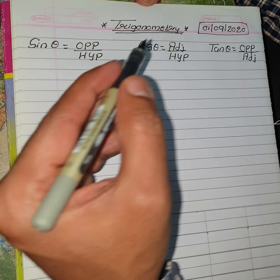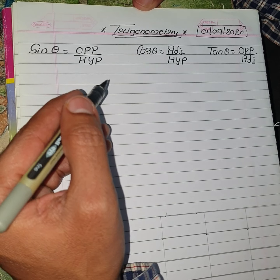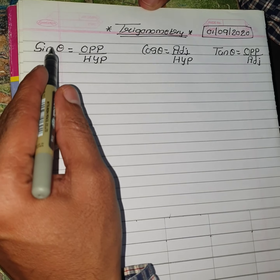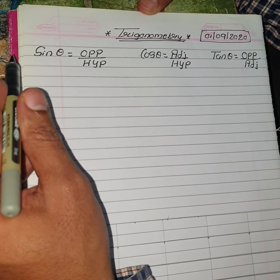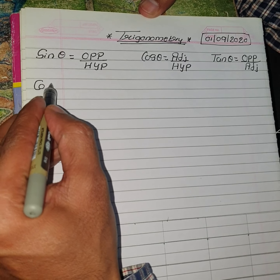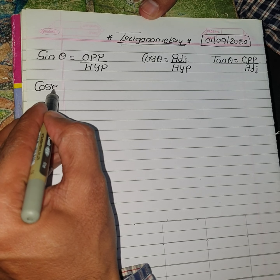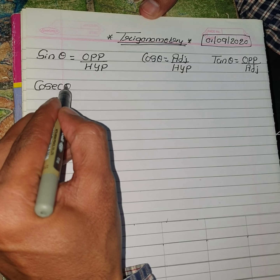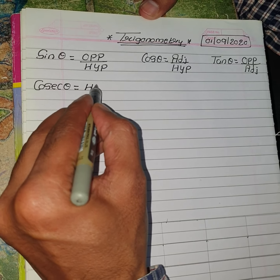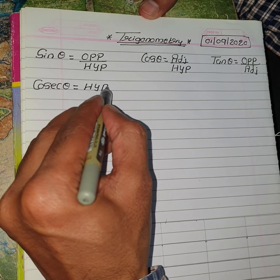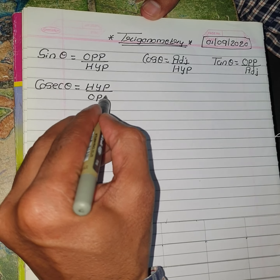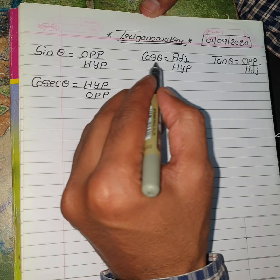In 10th Standard, we are going to see 3 more ratios. The reciprocal of Sin Theta is Cosec Theta. So what will be the formula? Hypotenuse upon Opposite.